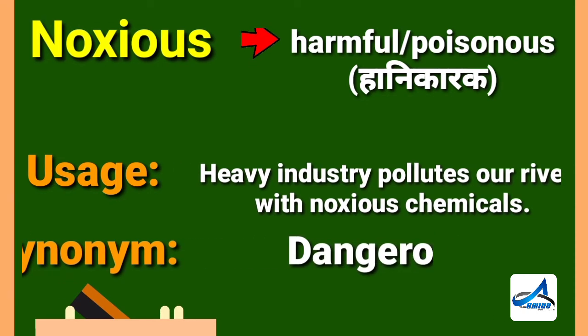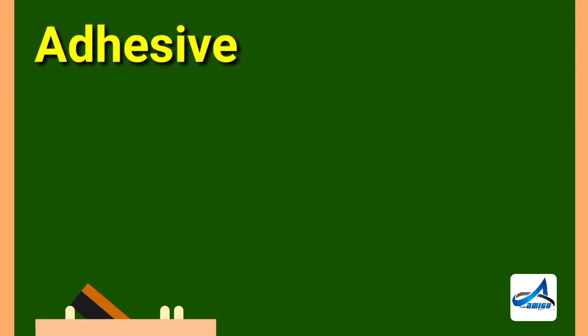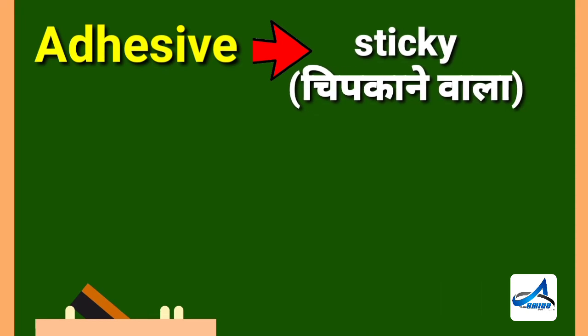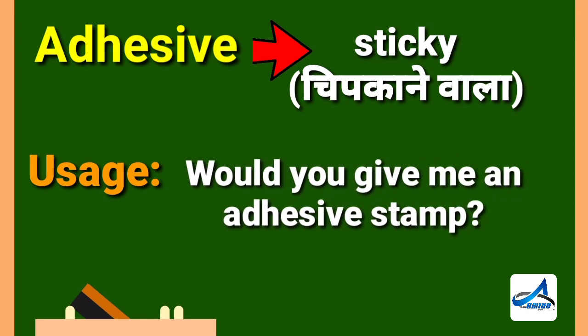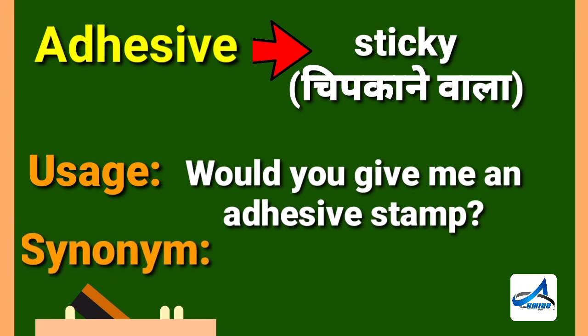Last but not least: adhesive. Adhesive means sticky. Its Hindi meaning is 'chipkane wala.' Now look at its sentence: would you give me an adhesive stamp? Its synonym is gummy.